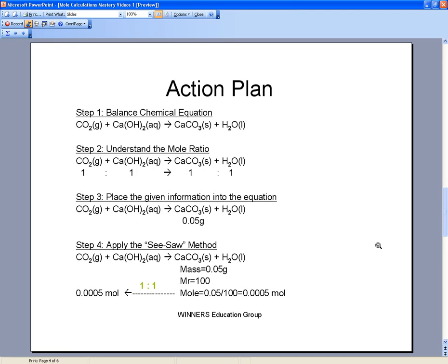Using mole ratio, you'll realize that one mole of CO2 will react with one mole of Ca(OH)2 to give one mole of CaCO3 precipitate and one mole of H2O. We'll place this into the equation just below it.